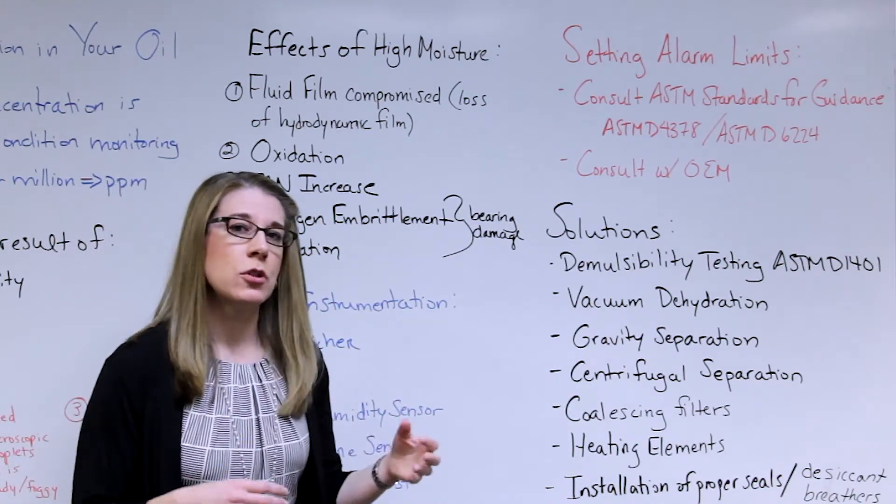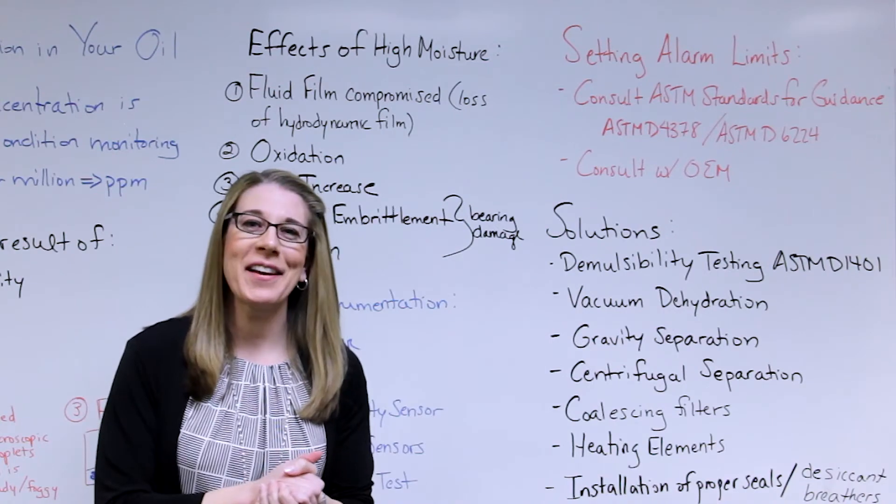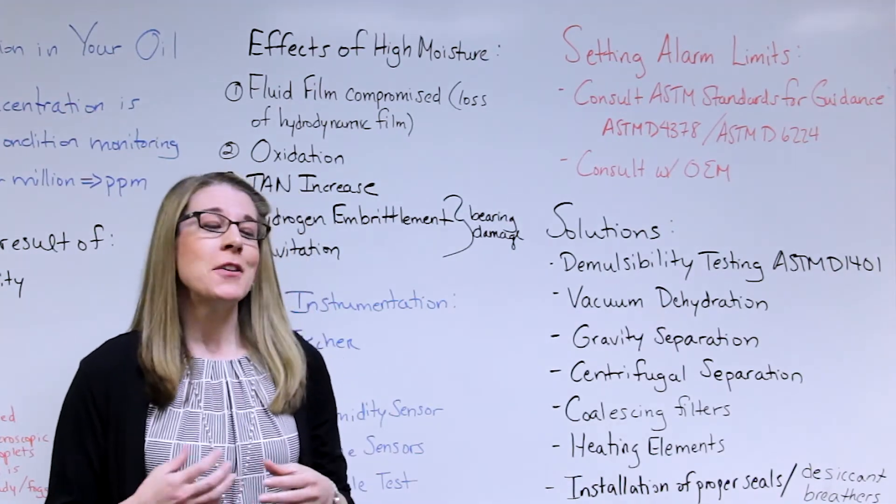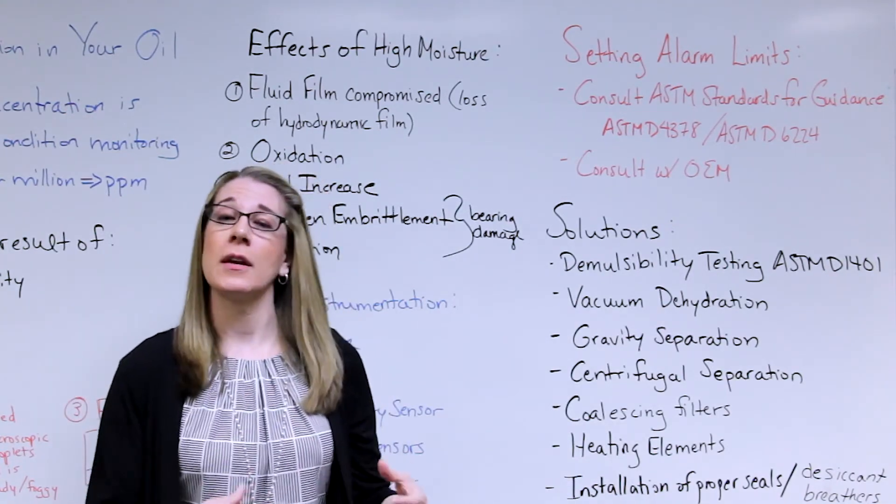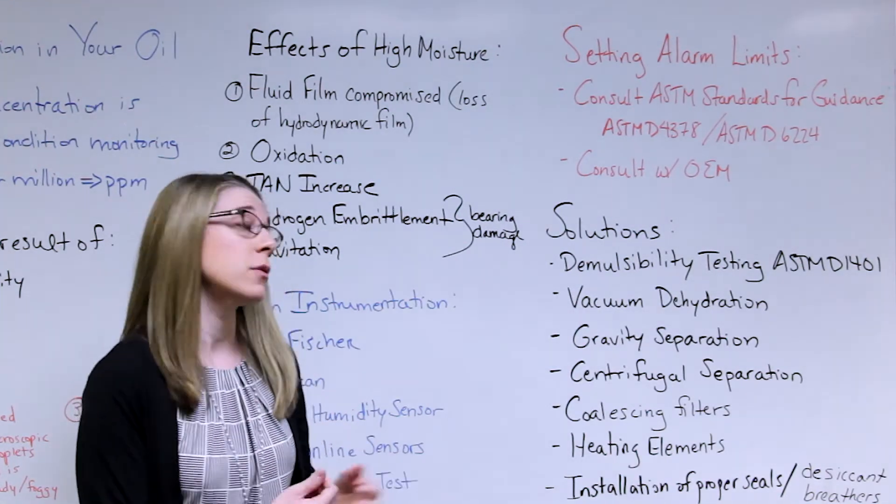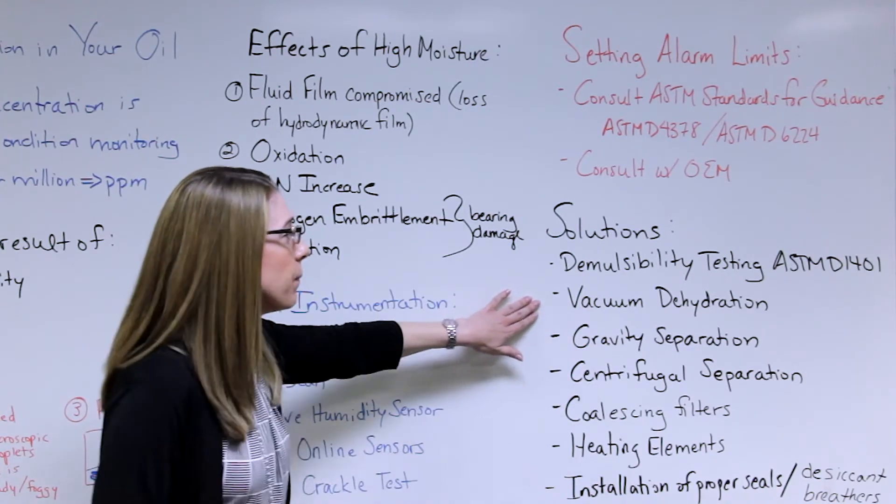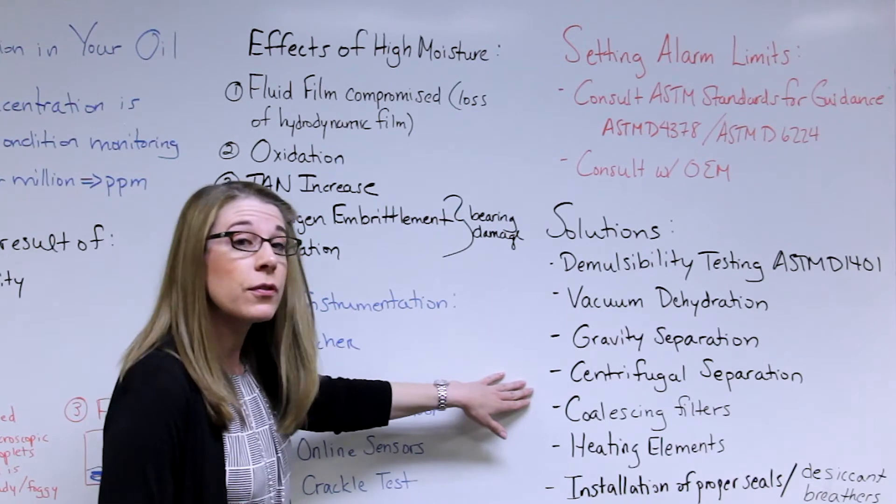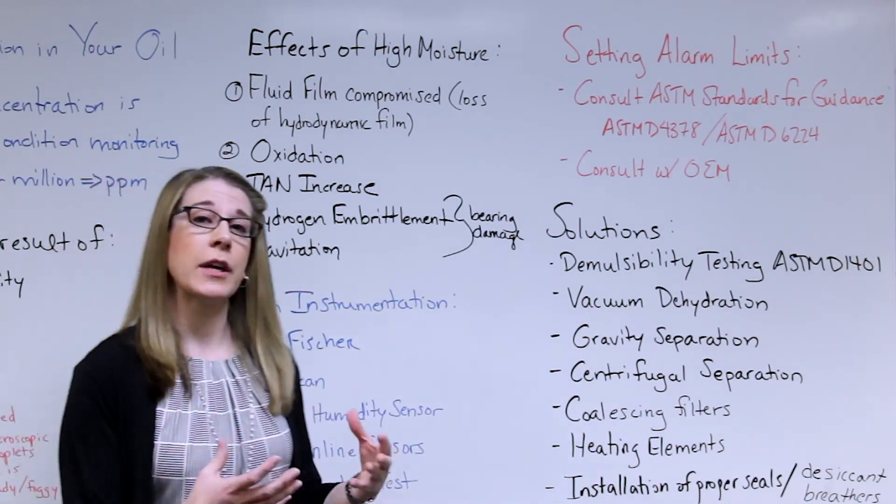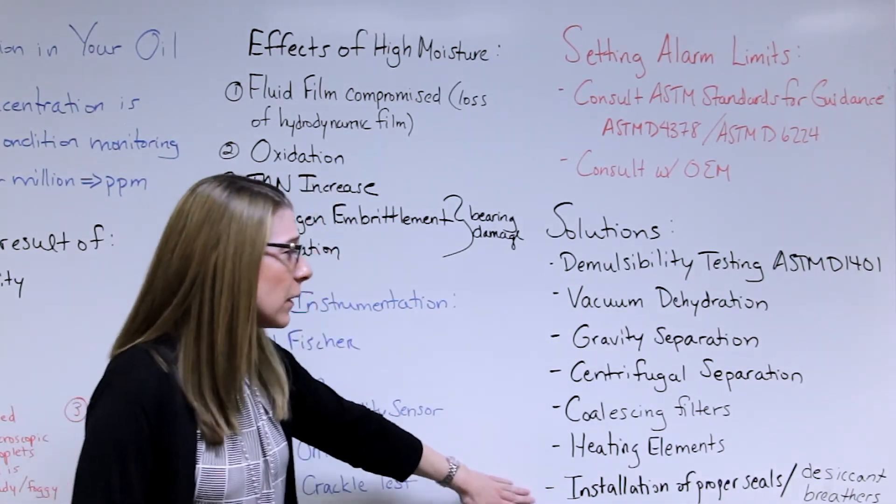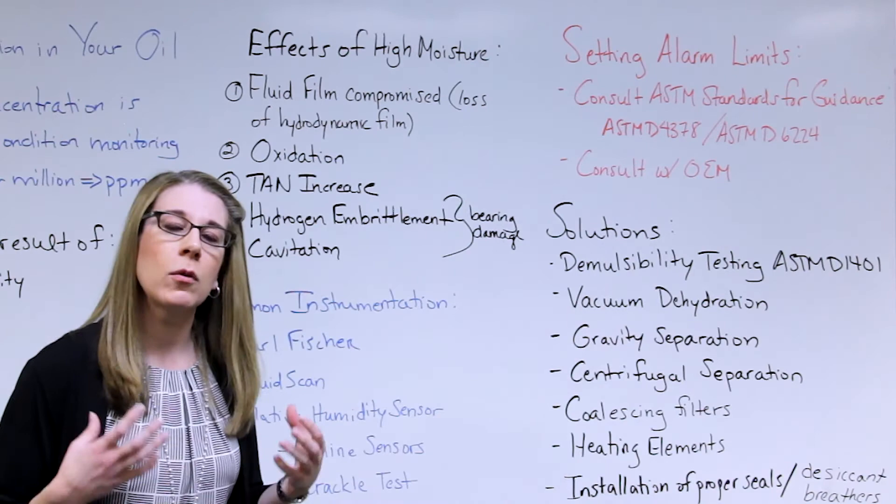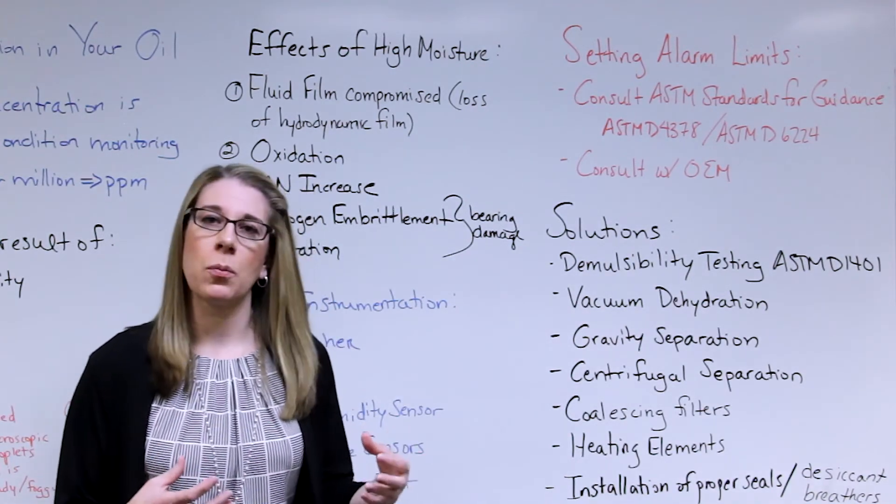Let's move on to solutions. Once you get a high reading back, now what? As the reliability engineer on site, you have a lot of different options depending on how much money you want to spend, how much time you have, and the criticality of the component. There are different options for dealing with high moisture levels: vacuum dehydration methods, gravity separation, centrifugal separation, coalescing filters, heating elements. Lastly, once you get this problem solved, you want to go back and look at your maintenance program. How are the seals? How are the desiccant breathers? Do you have desiccant breathers installed on the component? Review those maintenance practices once you get the problem solved.